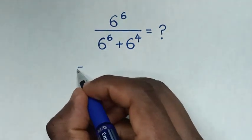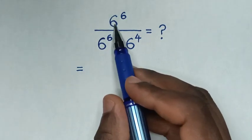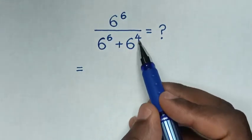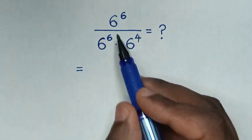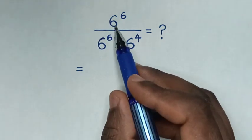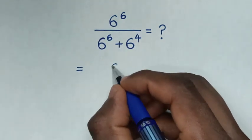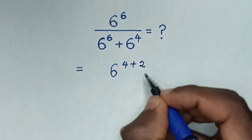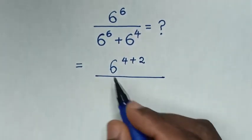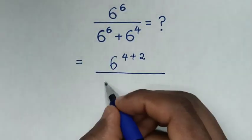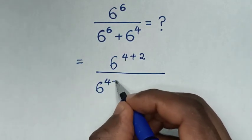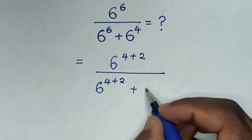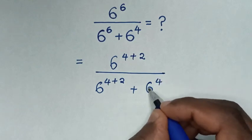So, it will be equal to — from here, 6 power of 6 and this 6 power of 6 will make it common to have 6 power of 4. So this 6 power of 6 is the same as 6 power of 4 plus 2, then over 6 power of 6 is the same as 6 power of 4 plus 2, then plus this 6 power of 4.